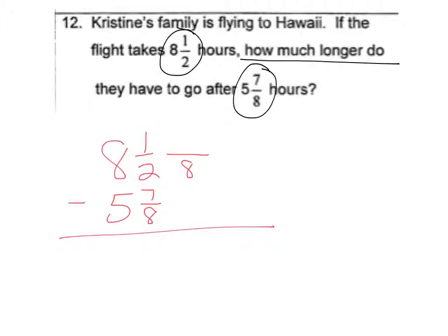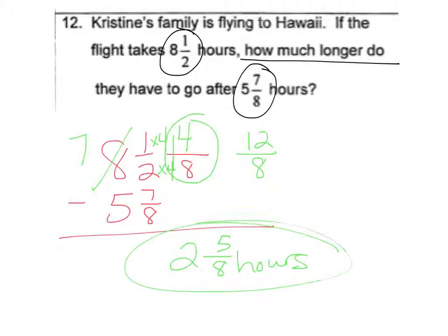8 would be our common denominator. So we would do times 4, times 4, giving us 4 eighths. Can't do 4 minus 7, so we have to borrow 1. 1 and 4 eighths is what I've got, so I changed that into an improper fraction. 1 times 8 is 8, plus 4 is 12 eighths. 12 eighths minus 7 eighths is 5 eighths, and then 7 minus 5 is 2. So 2 and 5 eighths hours is how much they have left on their trip.